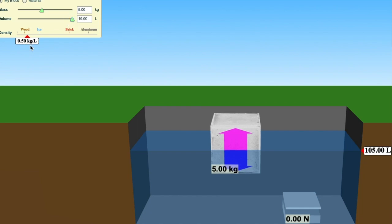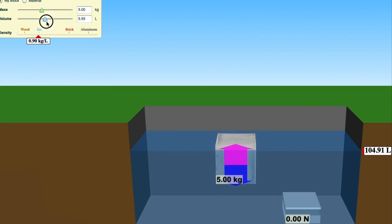So if I make the volume even greater, such as that it is now 10, you'll notice now it's 0.5 kilograms per liter. And now I have here 50% of it is below the water level. So I still got five liters below the water level, but I have another five liters sitting above the water level.